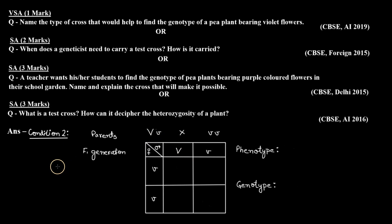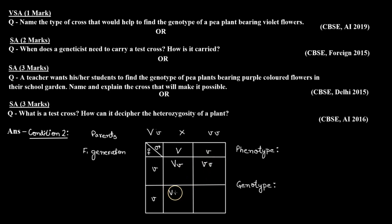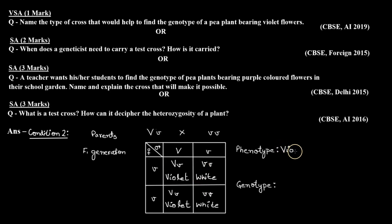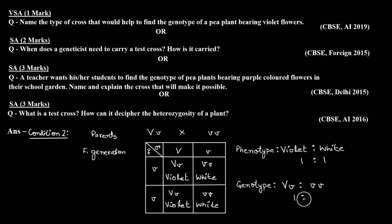In the second condition, we have a heterozygous dominant phenotype Vv crossed with the homozygous recessive parent vv. The offspring will be: Vv and vv. The Vv phenotype will be violet and the vv phenotype will be white. So we get two phenotypes — violet and white — in a ratio of 1:1, and two genotypes — Vv and vv — also in a ratio of 1:1.